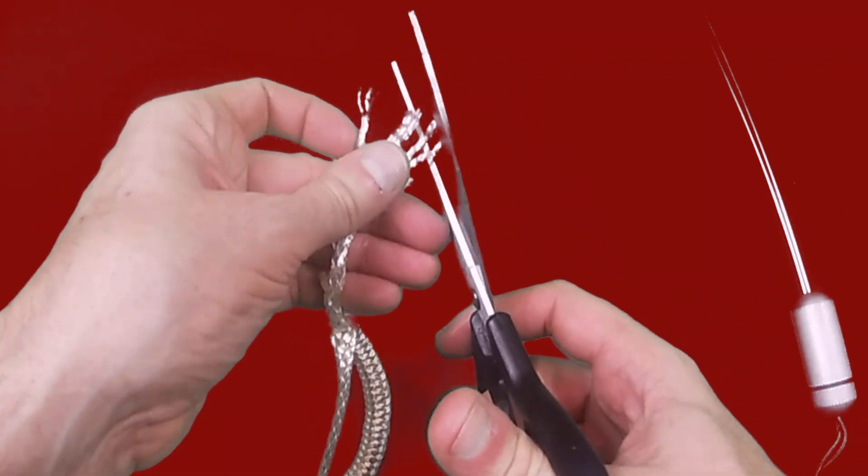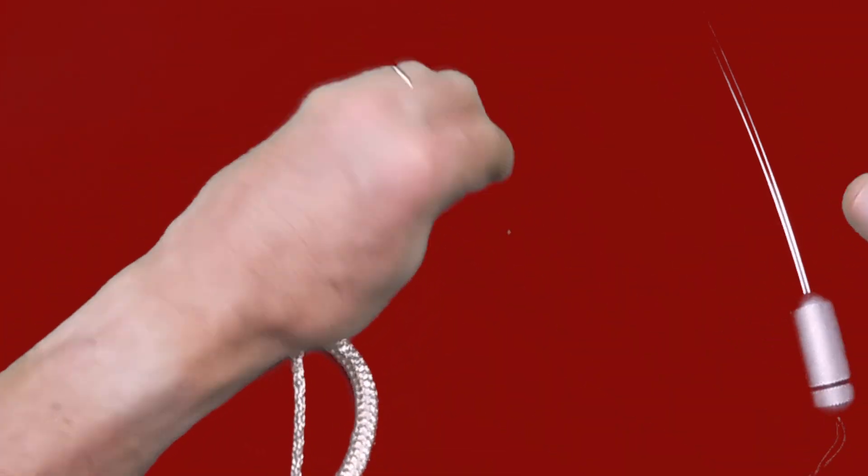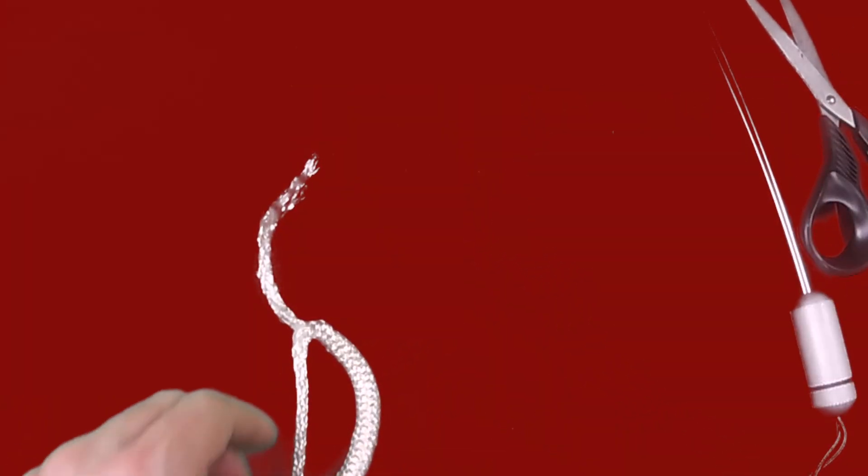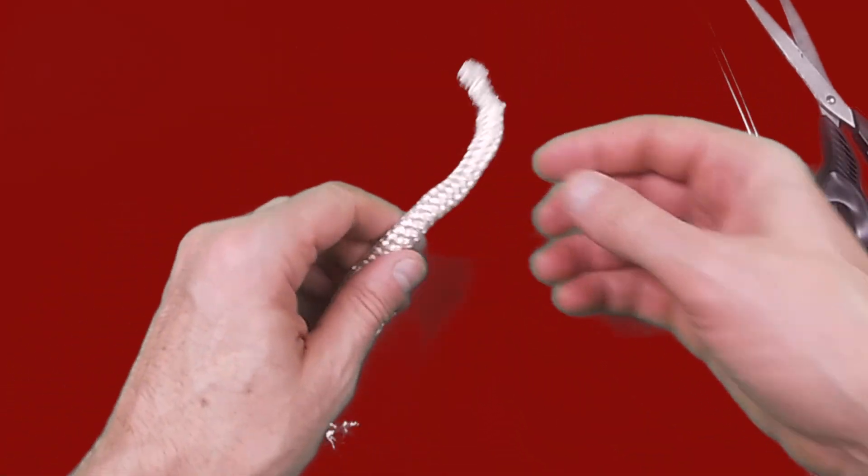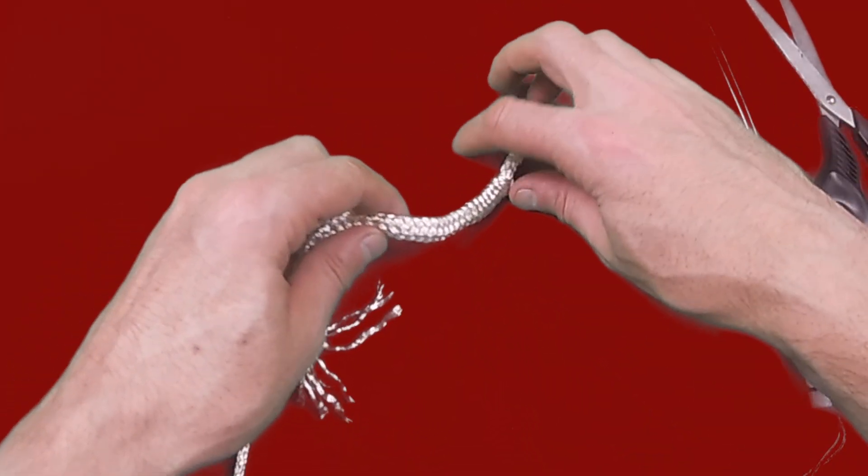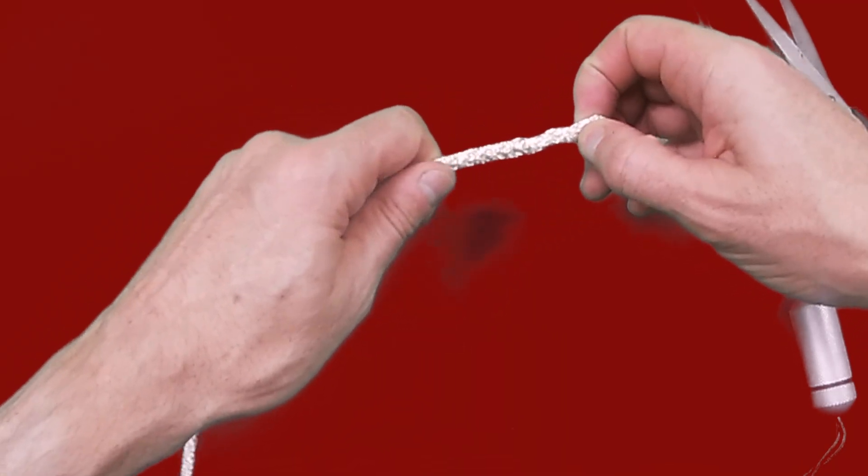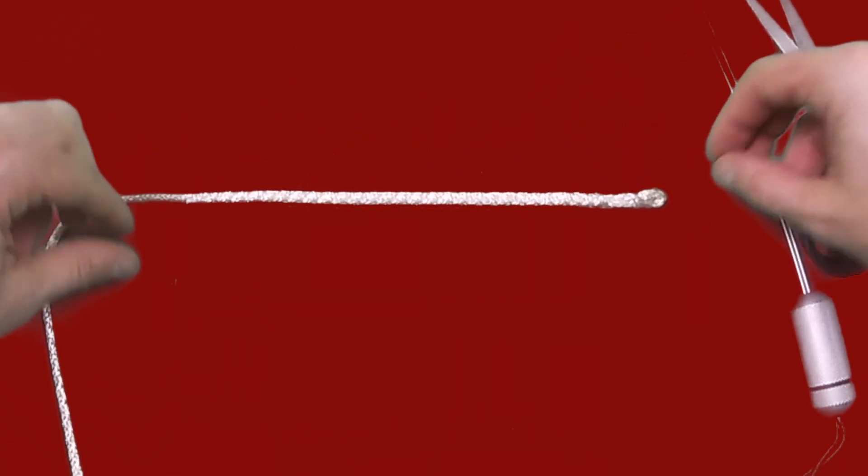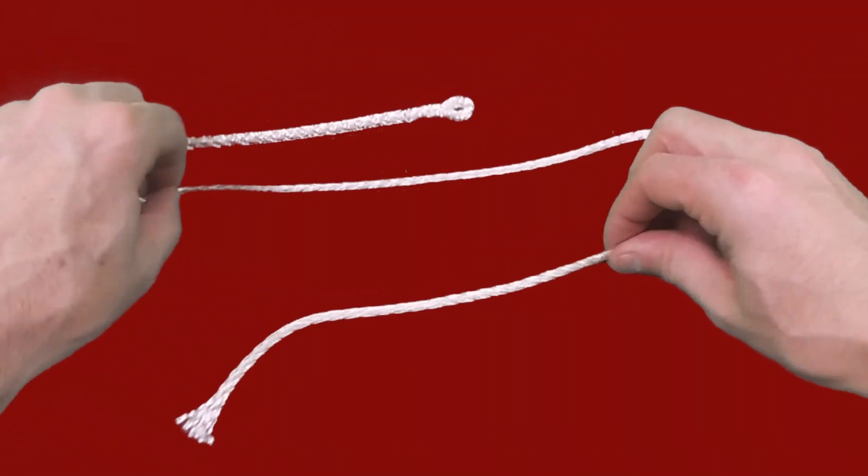Finish off the taper by one last angle cut at the very end and you're then ready to pull the tail back through the main line of the splice.